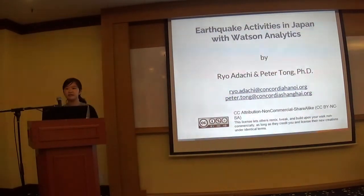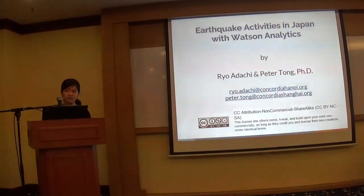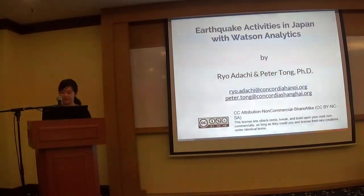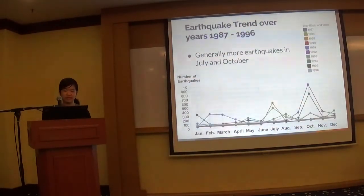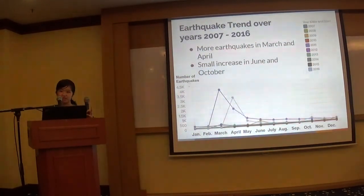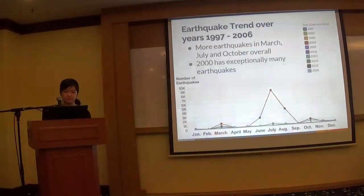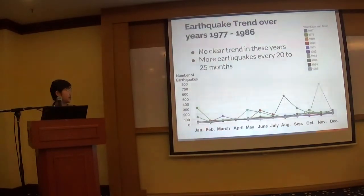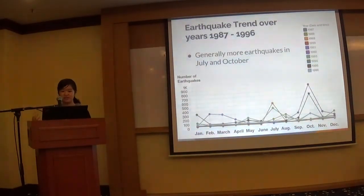I have a question on the period you chose to draw the trend in terms of the year. You chose one period, then another set, then another set. What made you cut off at these different numbers of years? I think there is kind of a change in trend in these years — the very old years didn't have much trend, but they had this consistency of every 20 months having more earthquakes, and then later on the pattern changed.